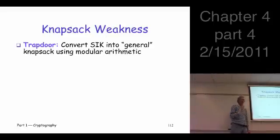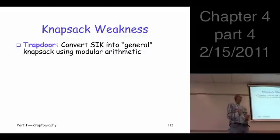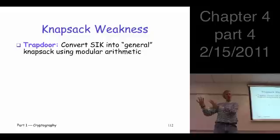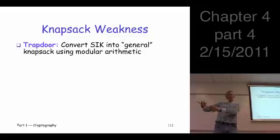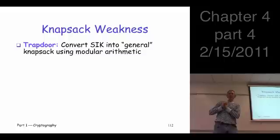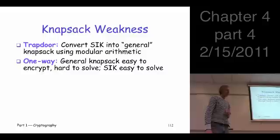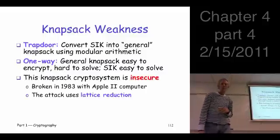Public key systems rely on some trapdoor one-way function. The trapdoor in the knapsack system is the multiplier m and modulus m, which converts the super-increasing knapsack into the general knapsack. Without access to that multiplier, you just see something that looks like a general knapsack with no obvious way to convert it back. It's easy to encrypt but hard to decrypt.